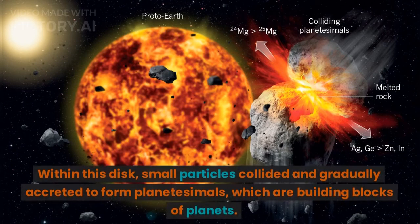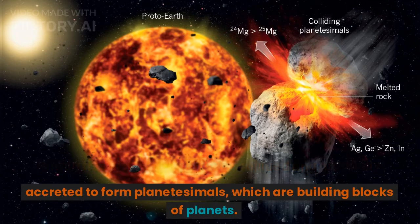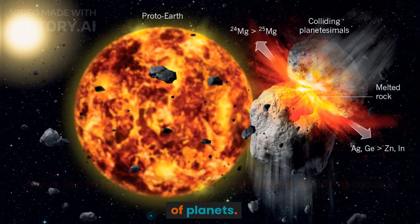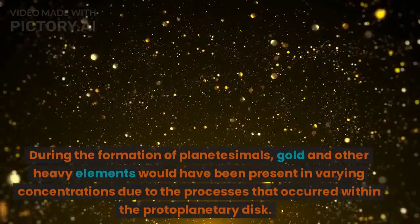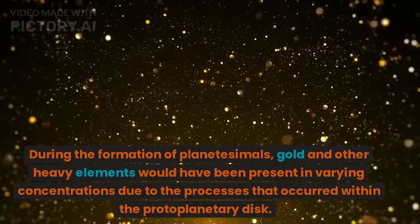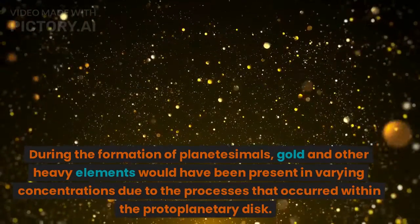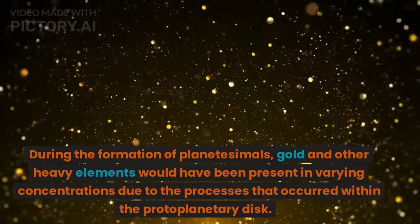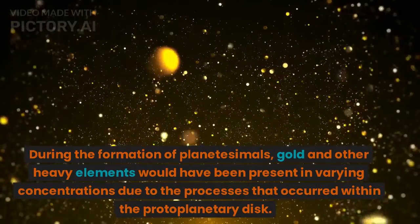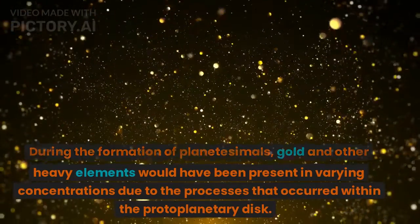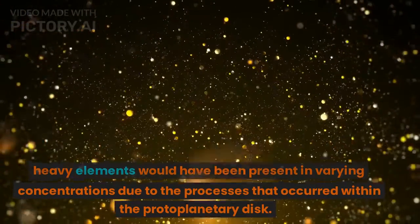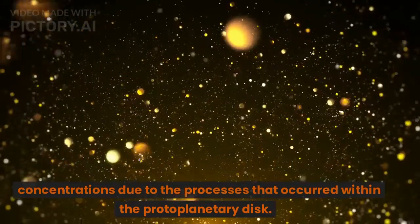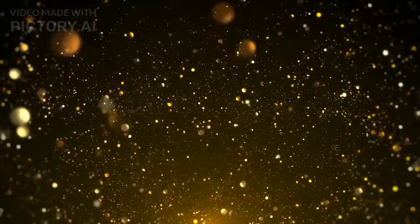Within this disk, small particles collided and gradually accreted to form planetesimals, which are building blocks of planets. During the formation of planetesimals, gold and other heavy elements would have been present in varying concentrations due to the processes that occurred within the protoplanetary disk.